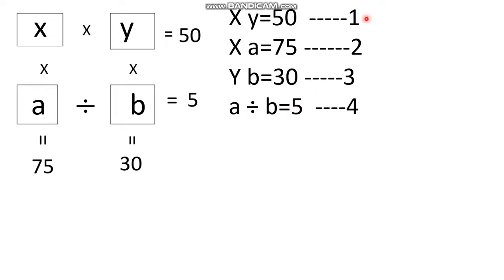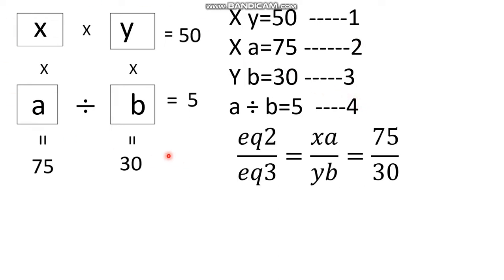Now divide equation number 2 by equation number 3. What I am going to get is: X times A divided by Y times B is equal to 75 divided by 30. Since A divided by B equals 5, I am going to substitute that in.